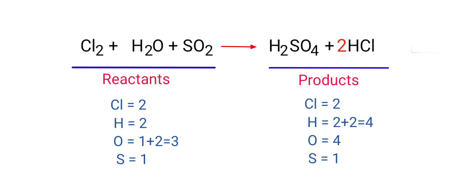The chlorine atoms are balanced. Now we need to balance the hydrogen and oxygen atoms. To do this, we need to put a coefficient of 2 in front of H2O.